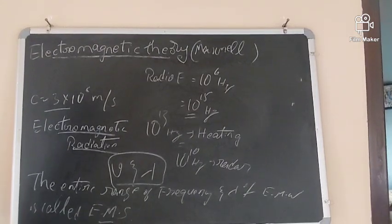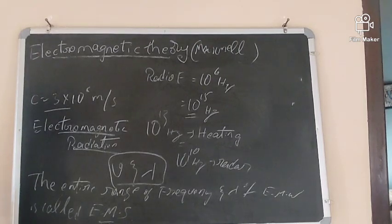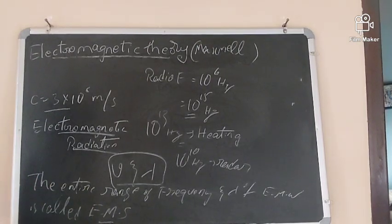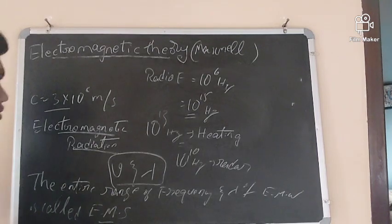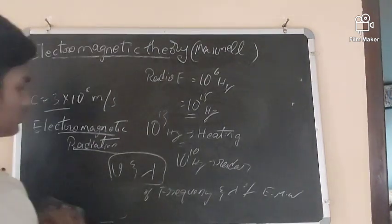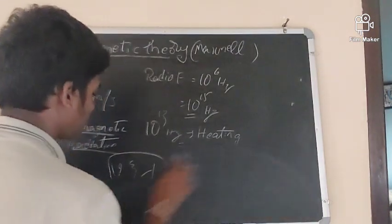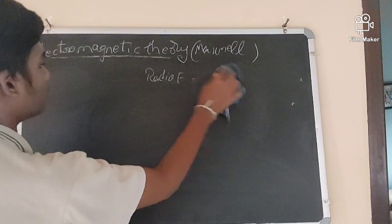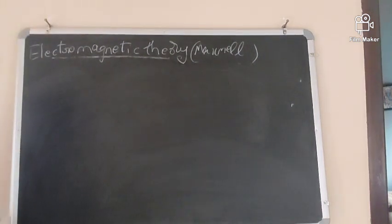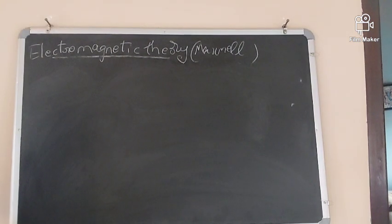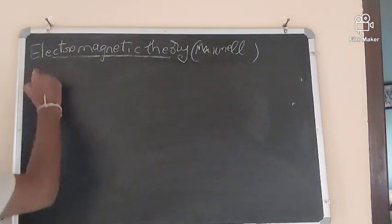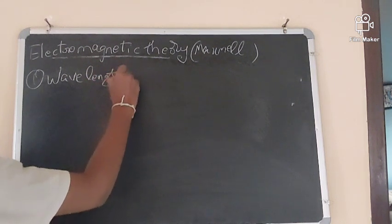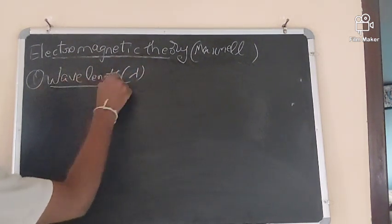Now let us see the characteristics of electromagnetic waves. What are the properties? The first property is wavelength. It is denoted by lambda (λ).